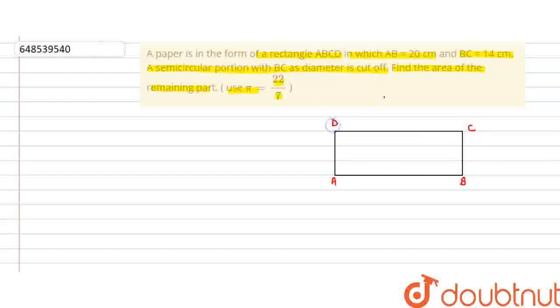Now it says that AB's value is 20 cm. Since opposite sides of a rectangle are equal, this is 20, so this will also be 20 cm. And BC is 14, so both these are 14. CB will also be 14, and AD will also be 14 cm.